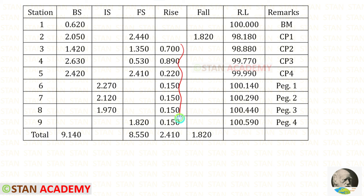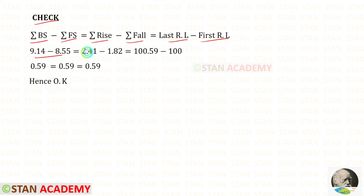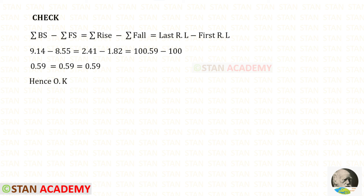After adding all rises we get their total. There is only one fall, so we write that value. Now we apply the arithmetic check: summation of backsights minus summation of foresights equals summation of rises minus summation of falls, and that equals the last reduced level minus the first reduced level. For all three we get the same value, hence the check is satisfied. Thank you for watching this video.